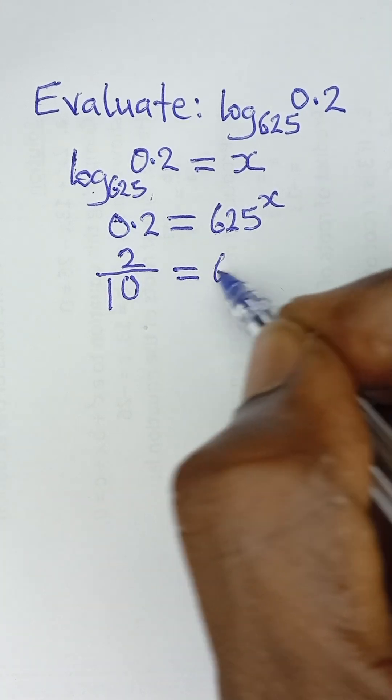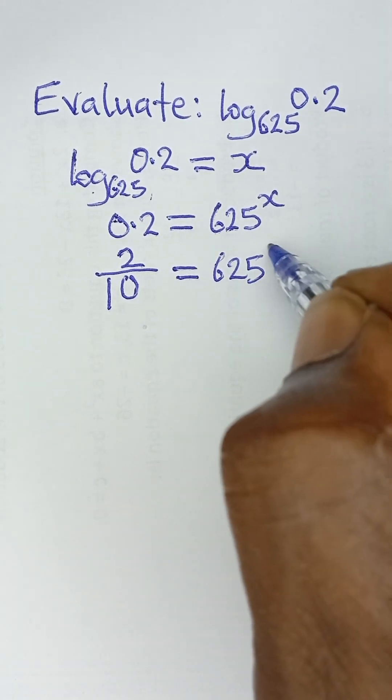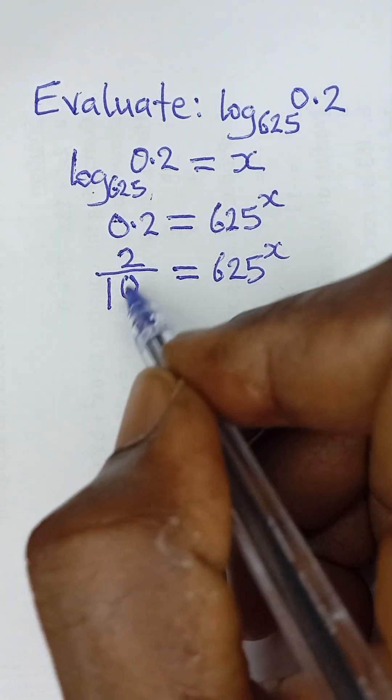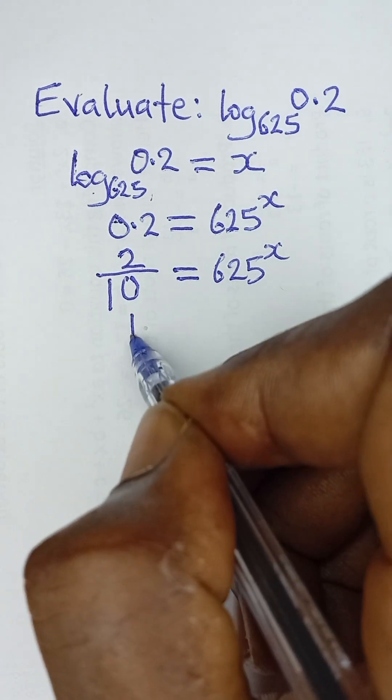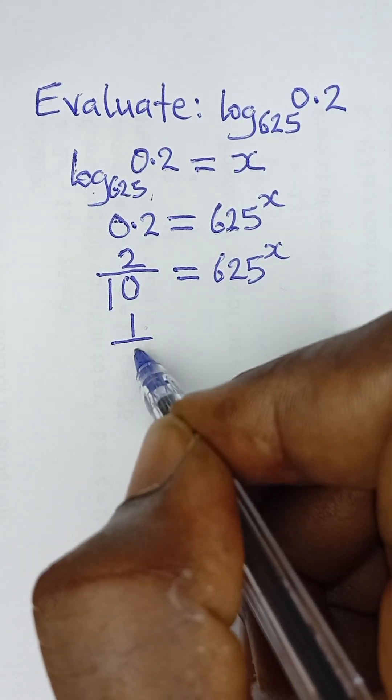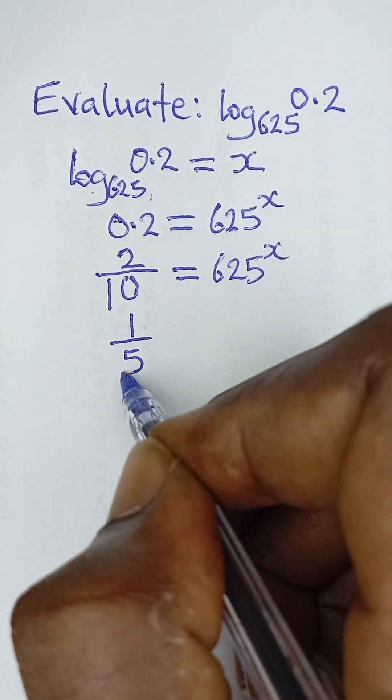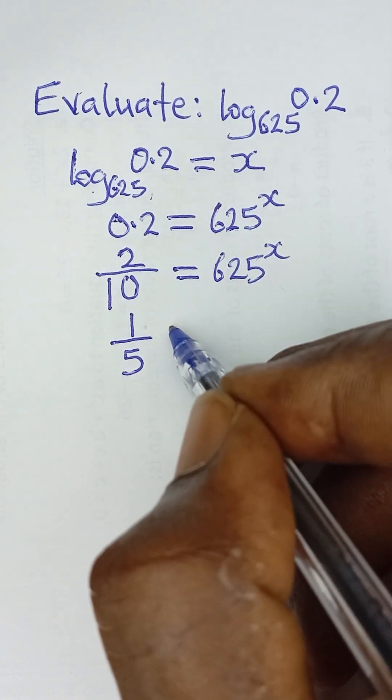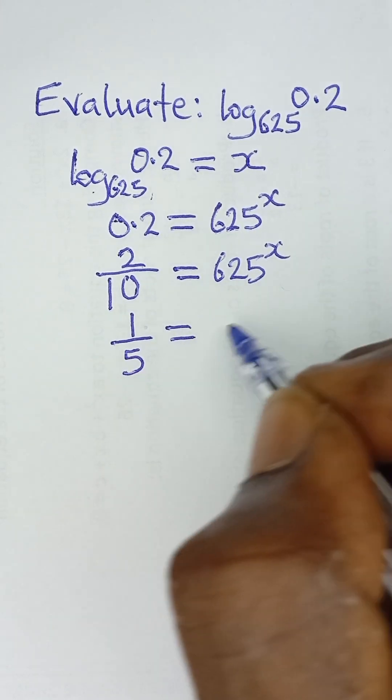And that will be equal to 625 raised to power x. Now in its lowest term, 2 over 10 is simply as 1 over 5 when you divide the numerator and denominator by 2. So that is 1 over 5 in its lowest term and that will be equal to...